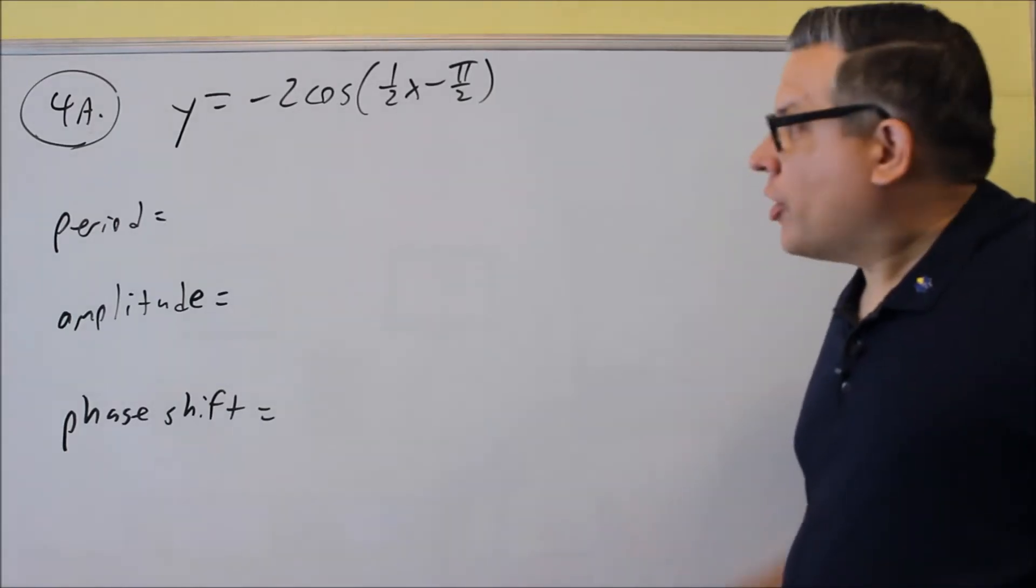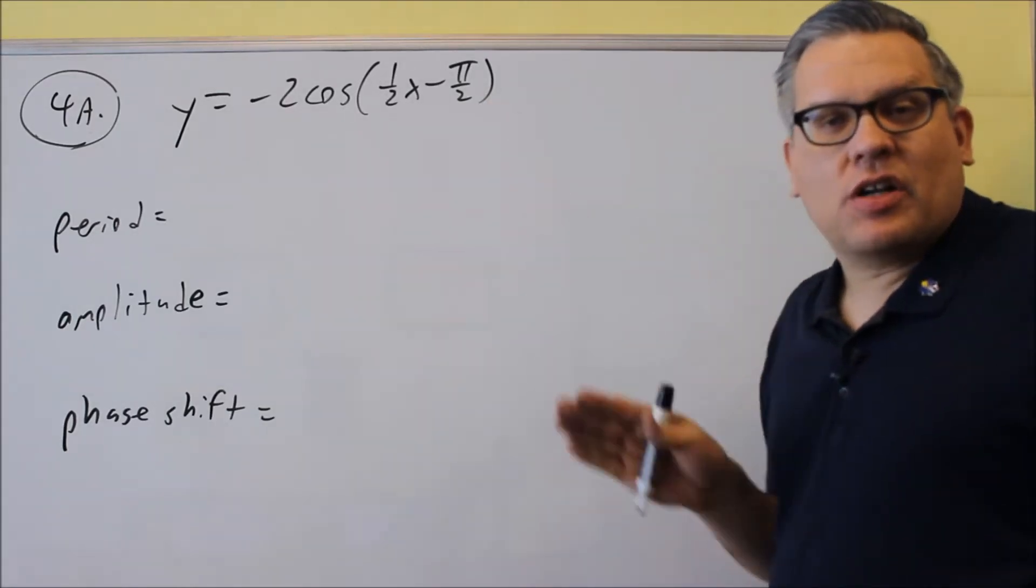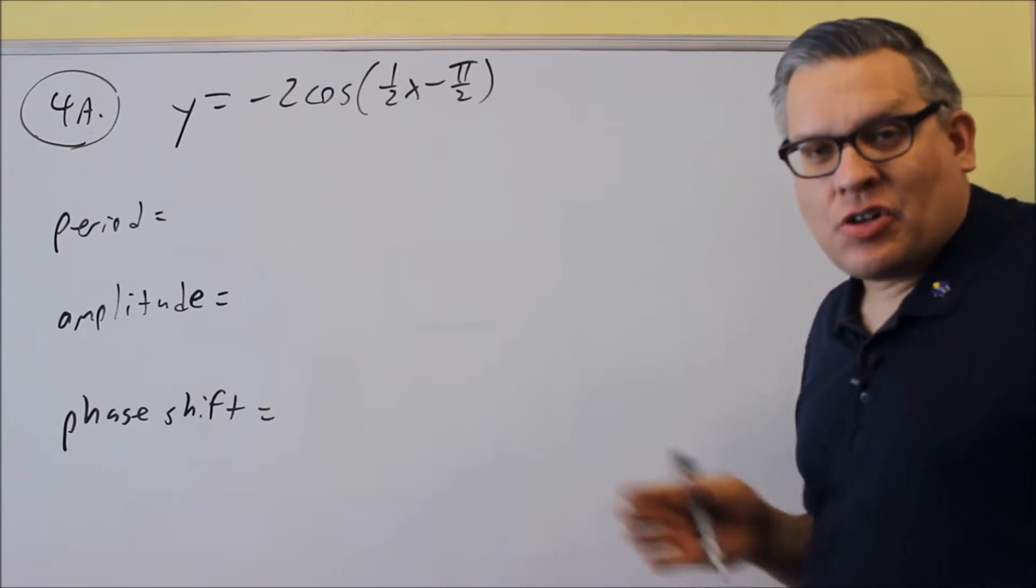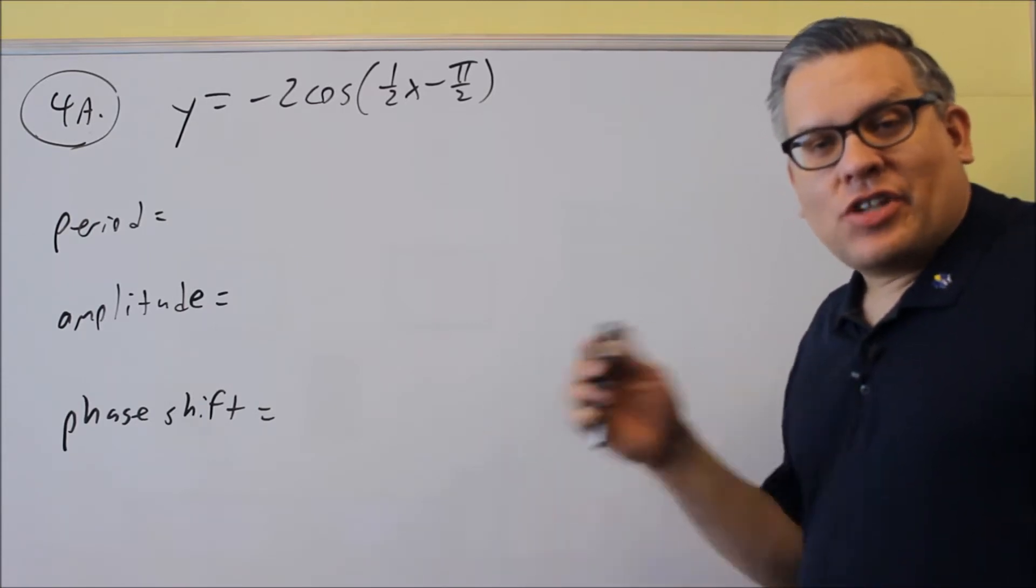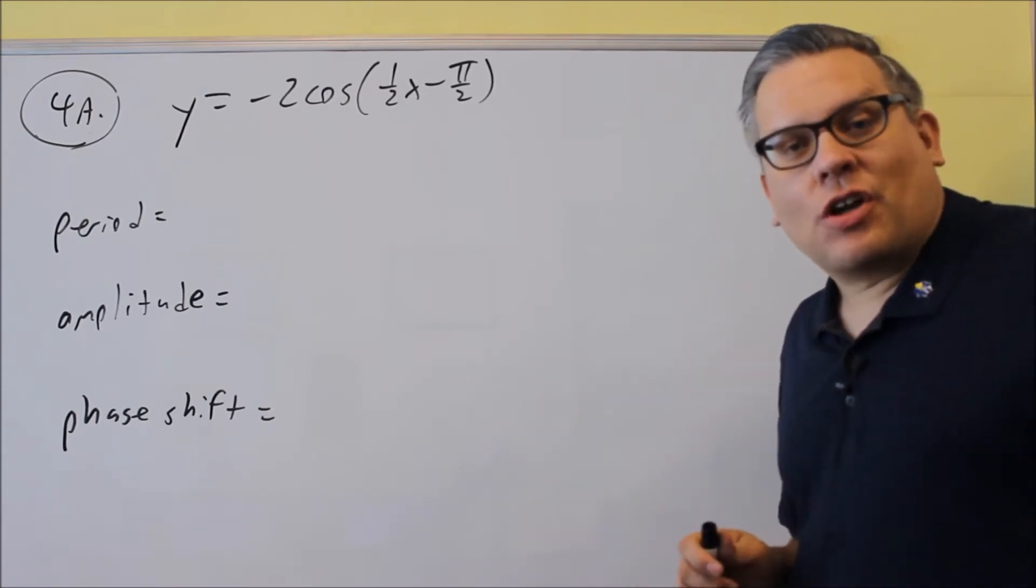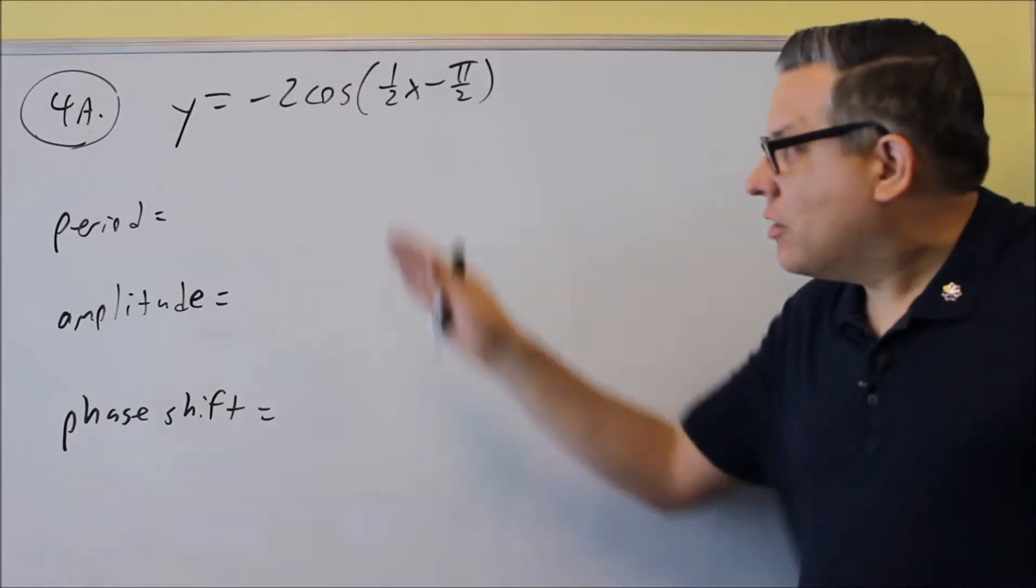Okay, number four involves graphing. When I graph, it's either going to be a sine or a cosine graph. There's not going to be any graphs of tangent, cotangent, secant, and cosecant in the test. It's just going to be sine or cosine for number four.